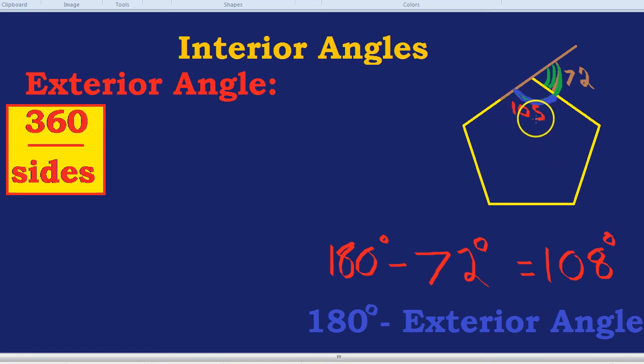Now I know there are different ways of finding the interior angle, some to do with multiplying by 180 and things like that. But I just find this the easiest and most straightforward way of finding the interior angle. Let's try that out with a different shape.